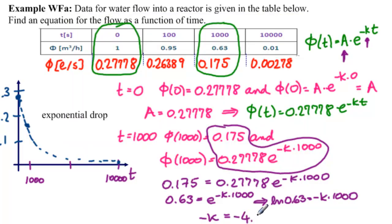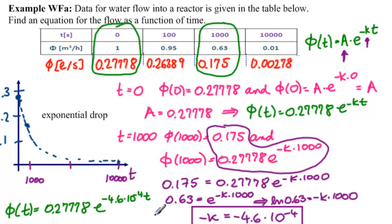minus 4.6 times 10 to the minus 4 is our k. What does that give us for our end formula? That gives us phi of t equals 0.27778 e to the minus k minus 4.6 times 10 to the minus 4 t.